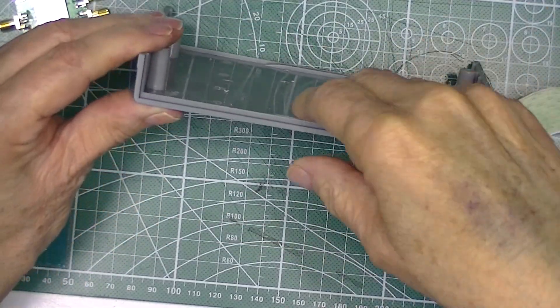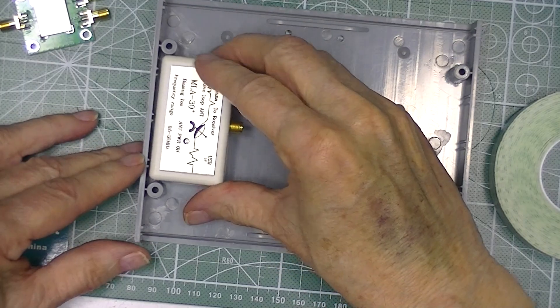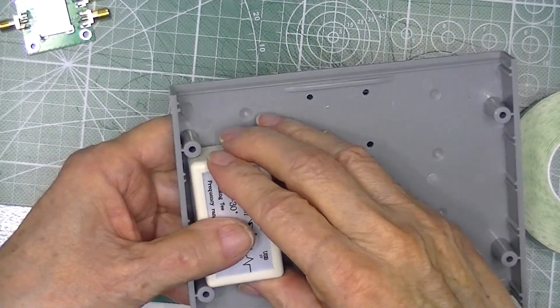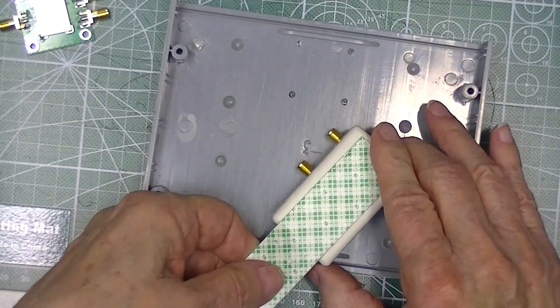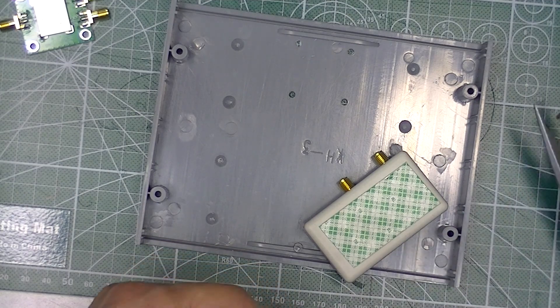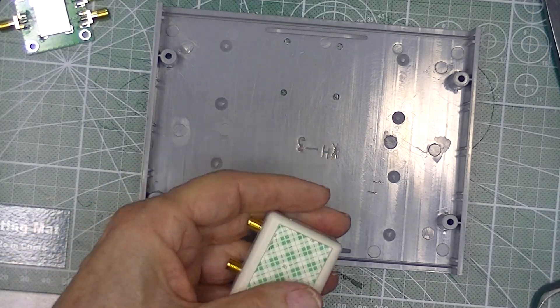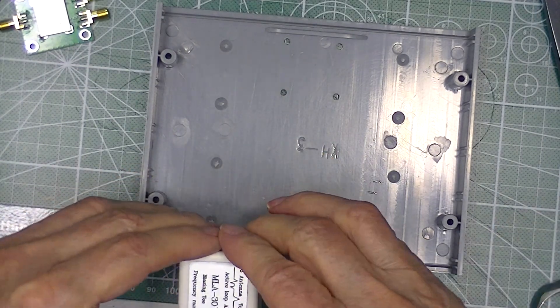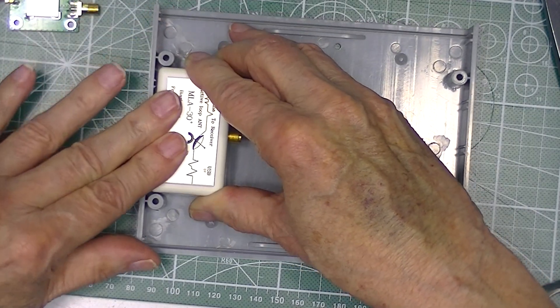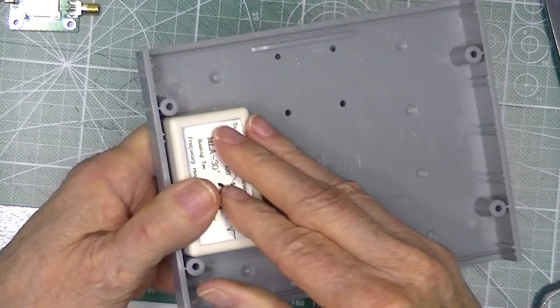Here's what I mean by getting rid of those standoffs. I wanted to do that because I wanted to put these things here, these bias T's. And with the standoffs it would have just been goofy. Now when we have a flat bottom I can just stick this down with double sided tape. And there we go.